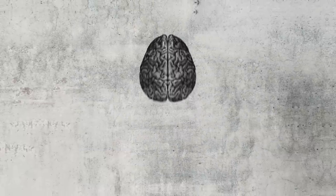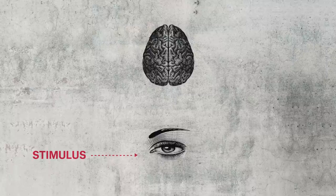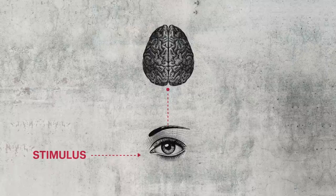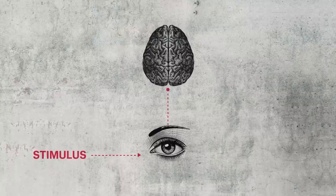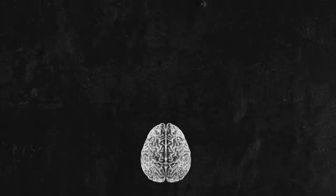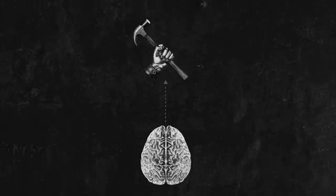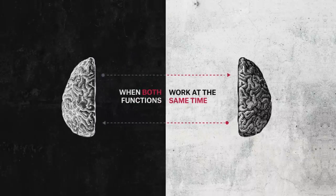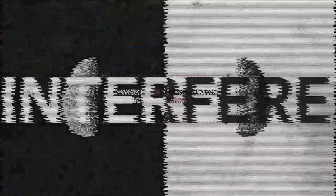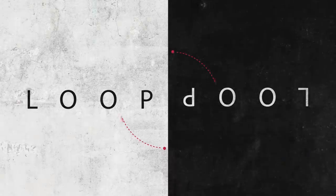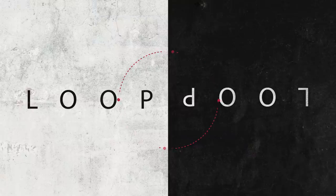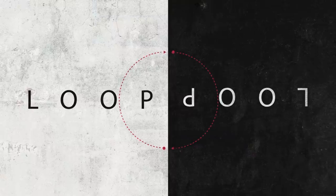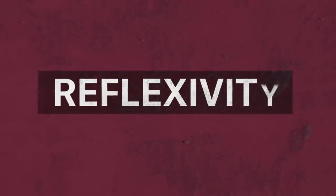In the cognitive function, the situation is supposed to determine the participant's views. In the causative function, the participant's views are supposed to determine the outcome. When both functions work at the same time, they interfere with each other. The two functions form a circular relationship or feedback loop. I call that reflexivity.